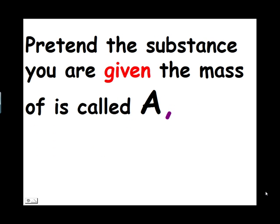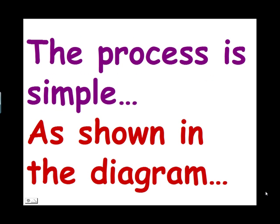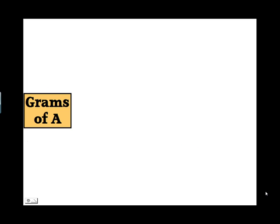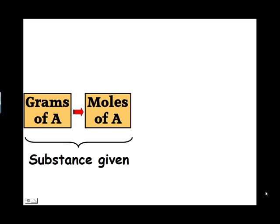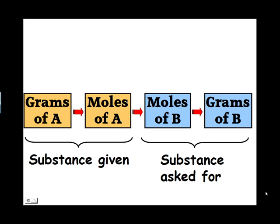Pretend the substance you are given the mass of is called A, and the substance you are asked the mass of is called B. The process is simple, as you will see as we create the following diagram. We take the grams of A and convert it to moles of A, then convert moles of A to moles of B, and lastly convert moles of B to grams of B.